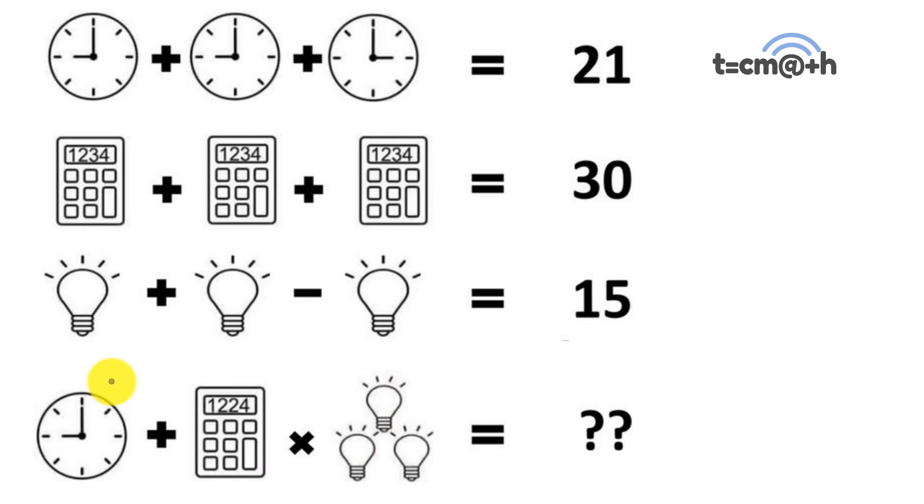And then we have this equation down here where we add the clock to the calculator and then multiply it by the number of light bulbs. So there's a couple of parts to this.